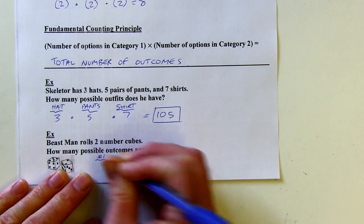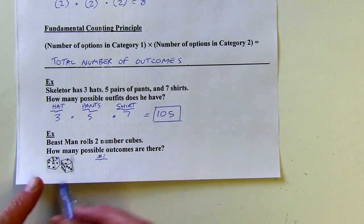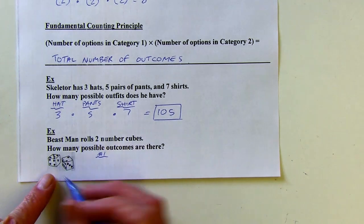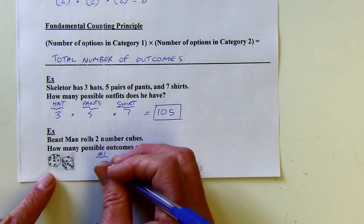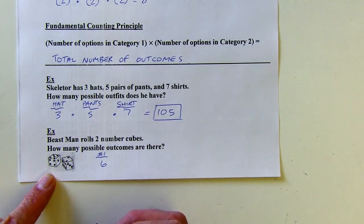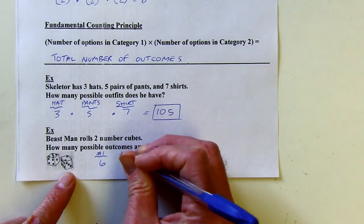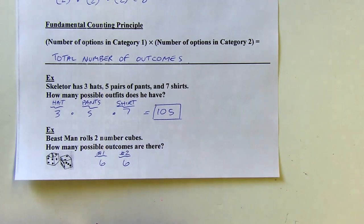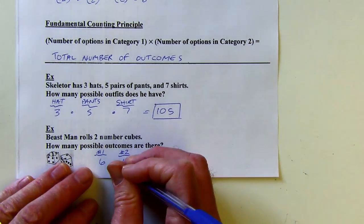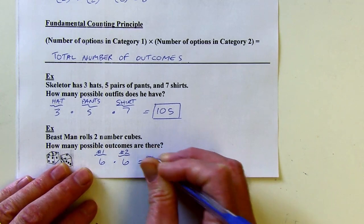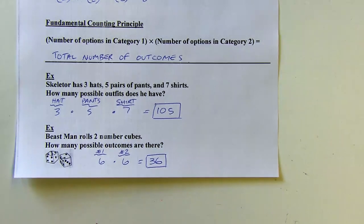Category number one is die number one — there are six things that can happen. And when you roll the second number cube, also six things can come up. So if you make a number chart and count them up, there are going to be 36 different possible outcomes.